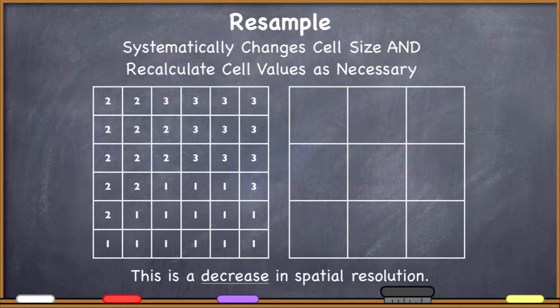Remember, we can't have different size cells in the same raster, so we're going to be systematically changing the cell size for every cell in the raster. Here we have an illustration of a decrease in spatial resolution. There's some distance for each one of these cells, and I'm going to convert it into another raster.